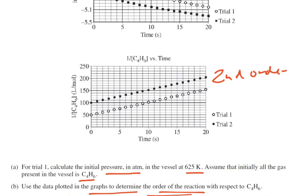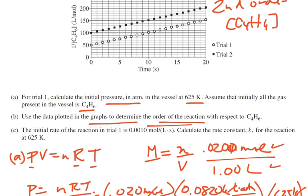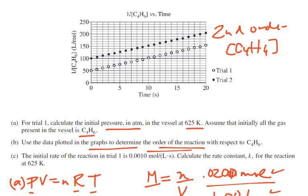So second order with respect to C4H6. And that's answer B. We don't have to really give any explanation for that. We just use the graph and figure that out. So all we have to do is say it's second order. And if we do, that's worth a point. That's part B.